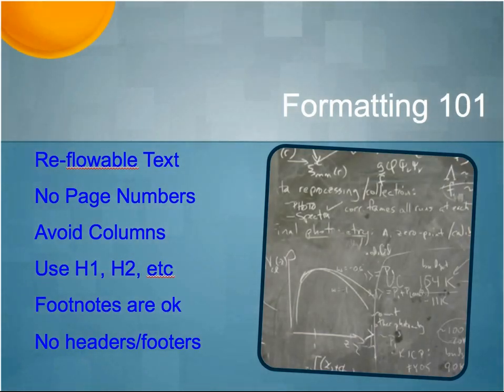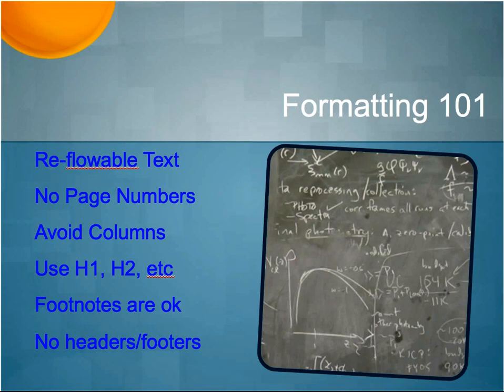Do not use page numbers in Kindle formatting. The reason is reflowable text across different devices and different sizes — the screen of an iPad is different from a small Kindle. If you reference page numbers in the body of your work, those page numbers may not exist. Readers are going to be upset when you tell them to see page 50 or 80 and there is no page 80. Also avoid columns — I've seen this work on occasion, but generally the formatting turns out less than desired.